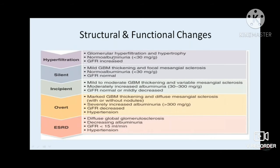Reviewing the stages with functional and structural changes: in hyperfiltration there can be normal albuminuria and elevated GFR with hyperfiltrating kidneys. In the silent stage there is glomerular basement membrane thickening and focal sclerosis. In incipient stage, there is glomerular basement membrane thickening and variable mesangial sclerosis, albuminuria begins, and GFR starts declining. At overt nephropathy there is microalbuminuria, decreasing GFR, and rising blood pressure. In end-stage renal disease there is proteinuria, declining GFR, hypertension, and global glomerular sclerosis.